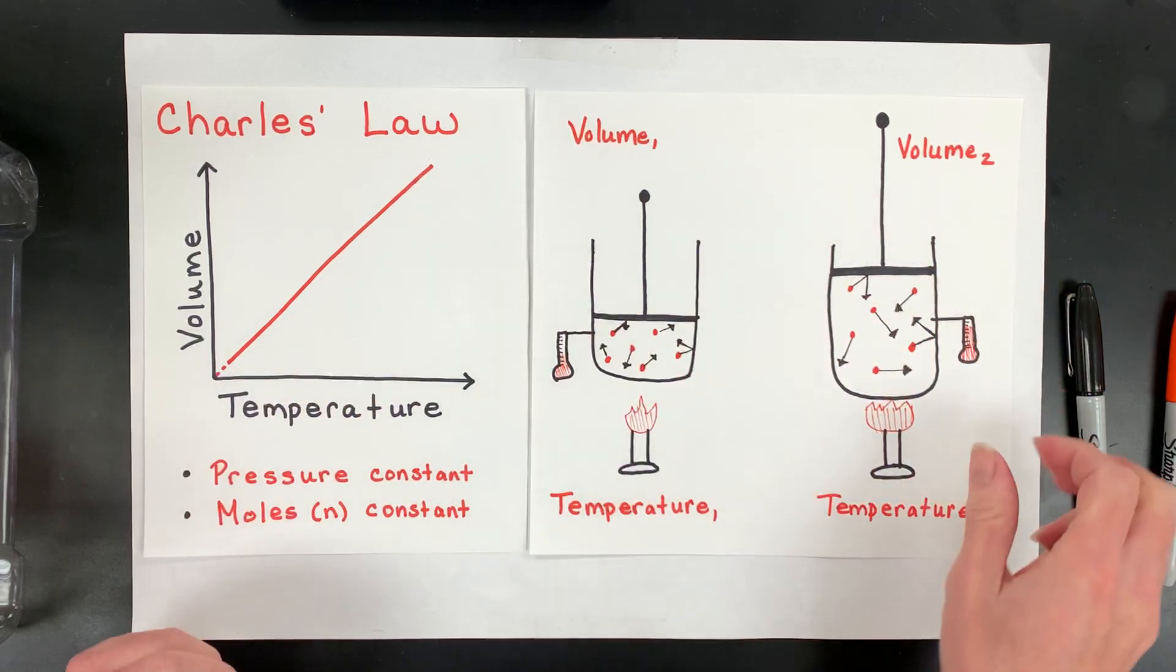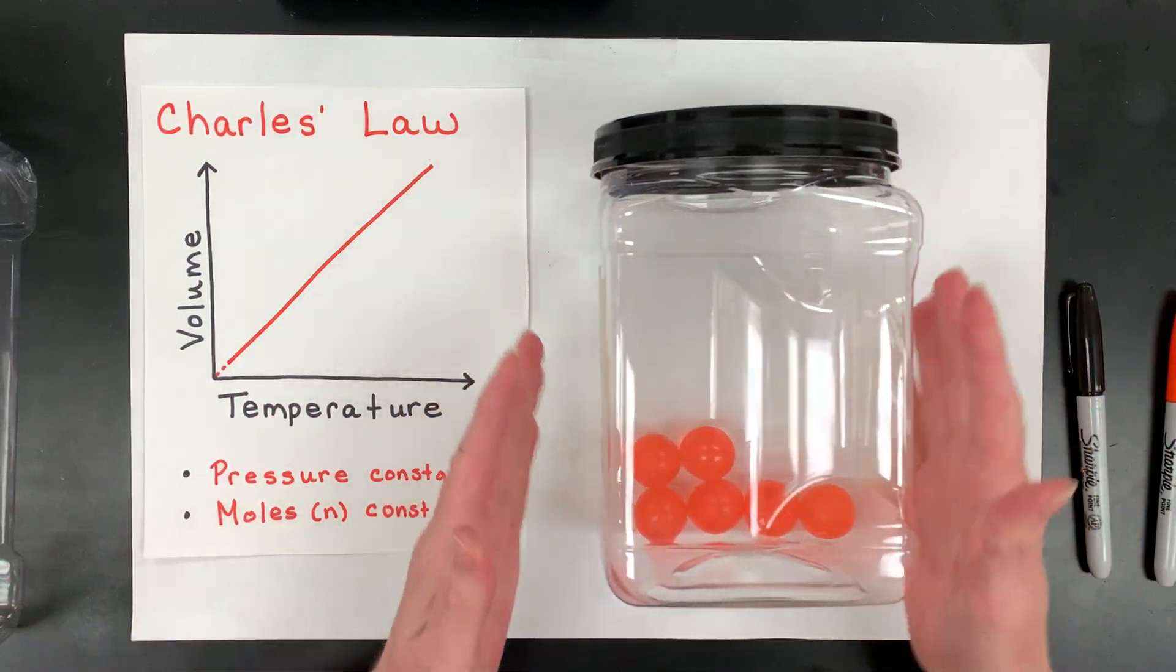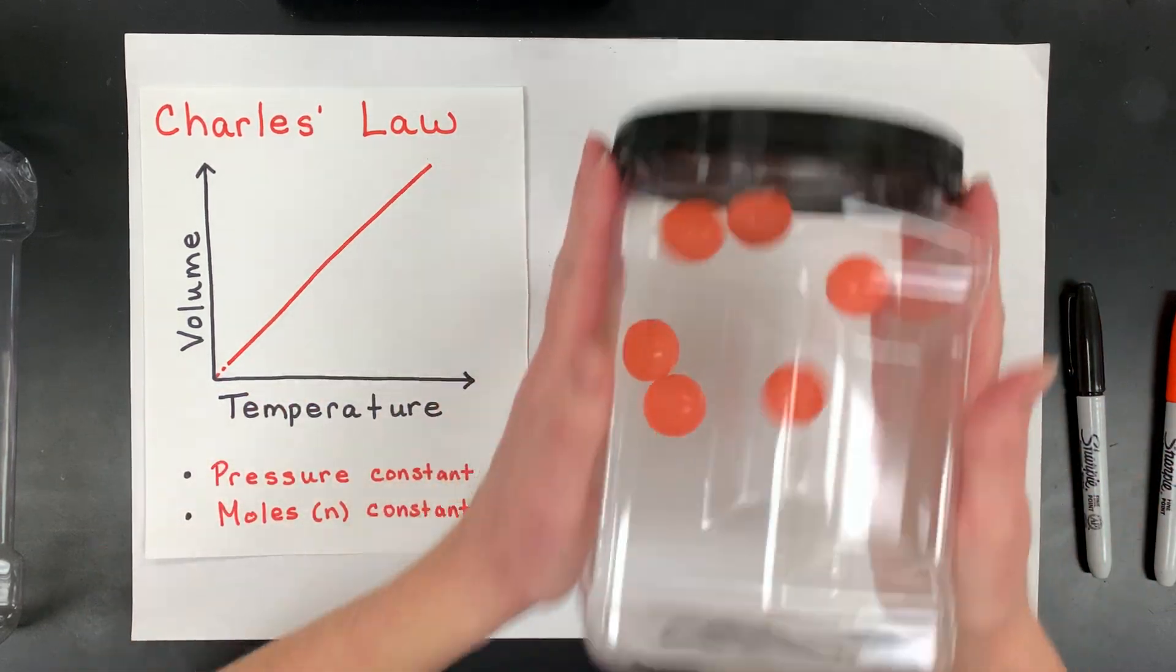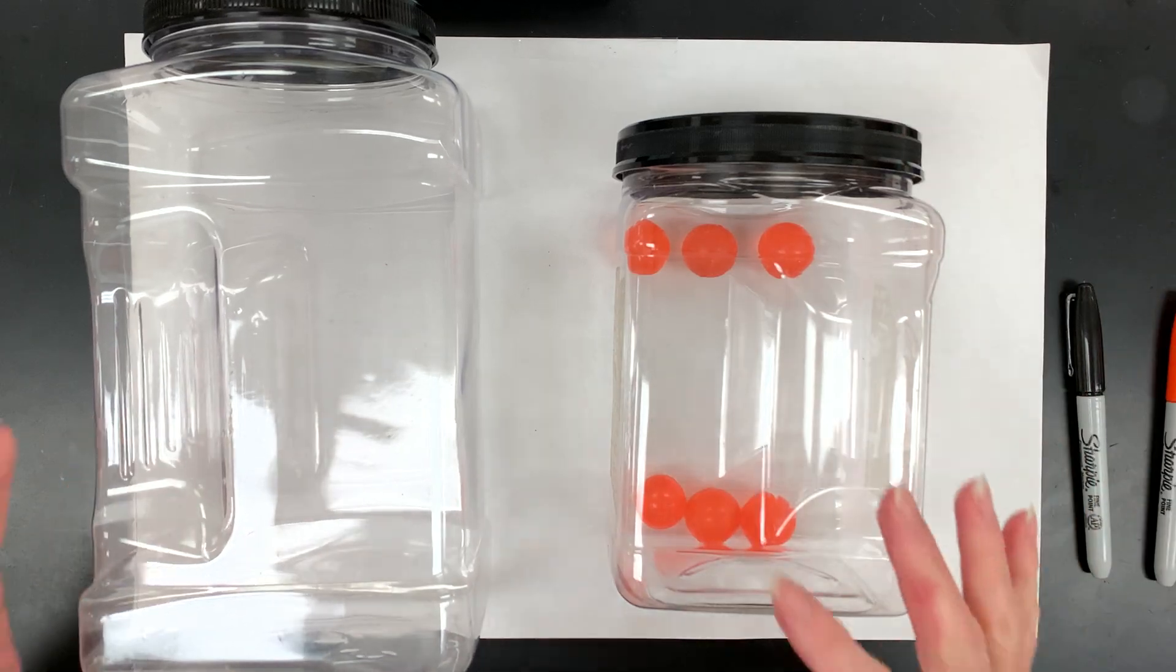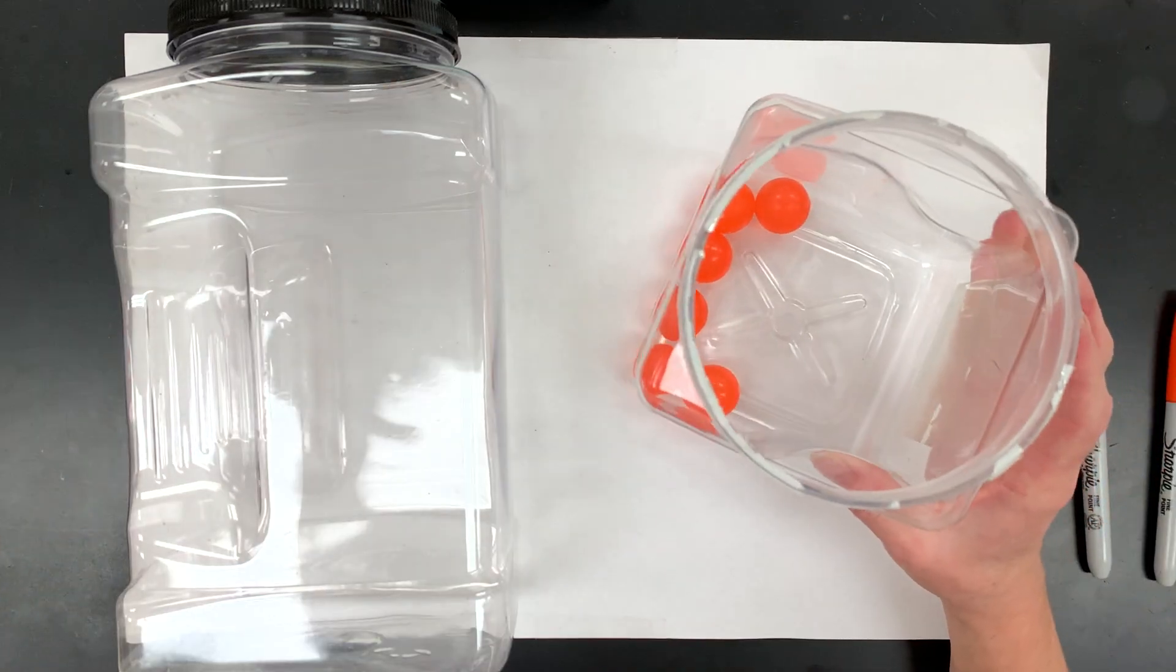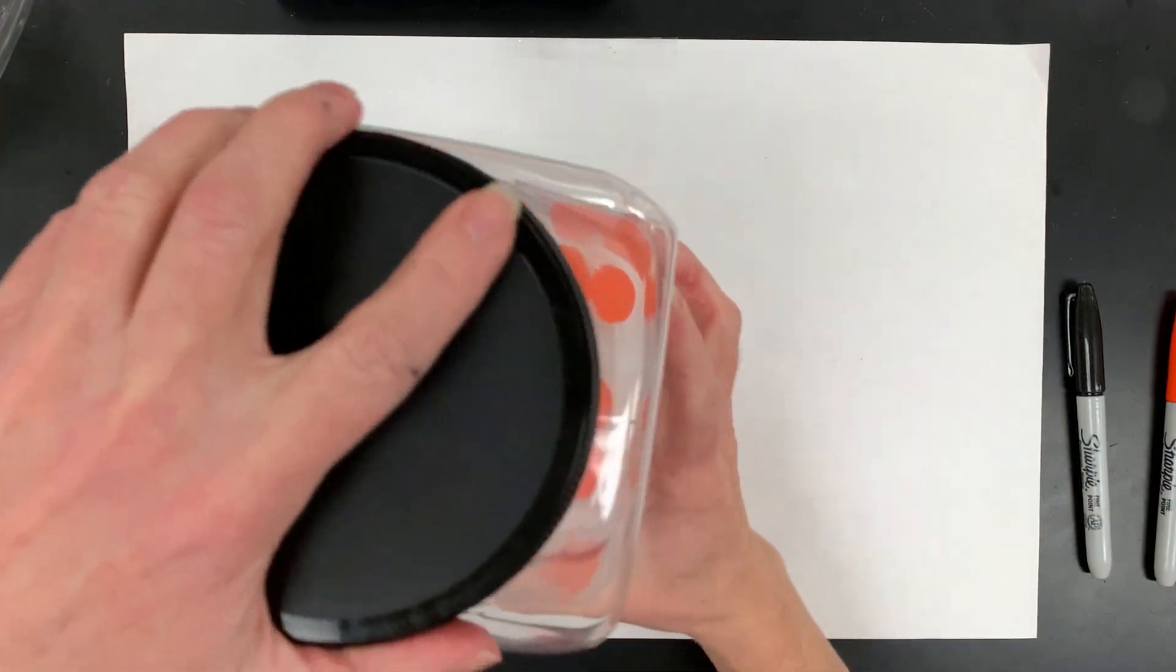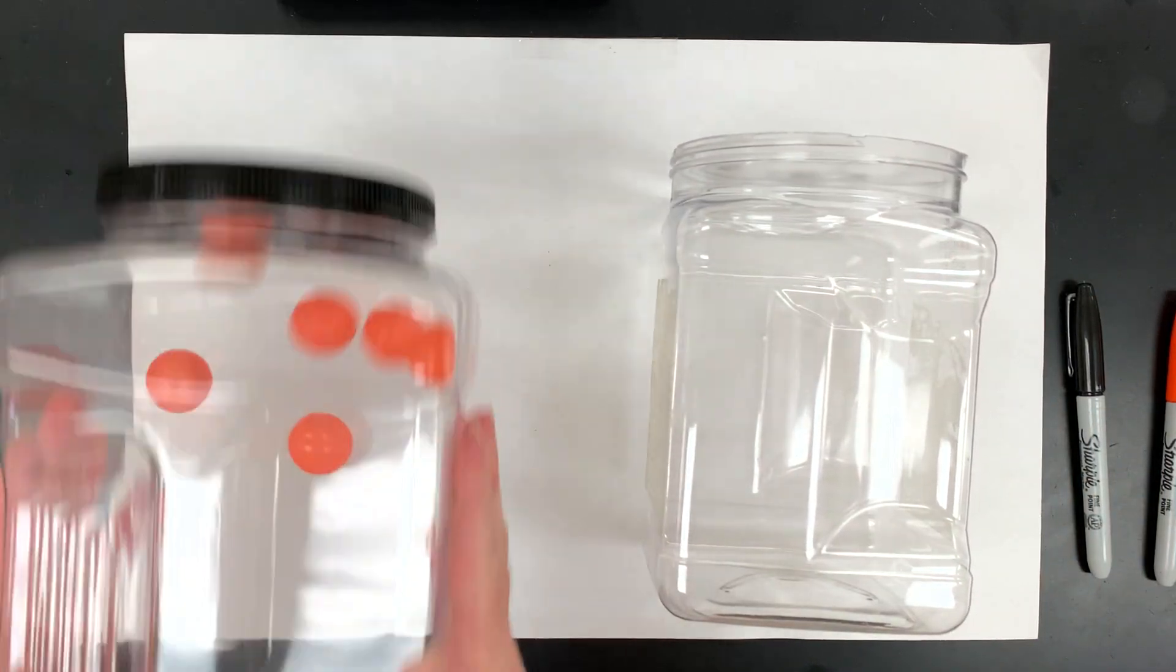Instead of just showing you a particulate view, I also want to try to show you with an actual set of pretend gas particles. Here is my original sample. It has this pressure, which is the collisions with the walls of the container. I have a set number of moles and the movement I was giving it is the temperature, and then it occupies this volume. With the example that I'm giving you, I'm going to have to change the volume by moving these over. But normally what would happen is you'd have a balloon or some kind of syringe or piston. What would happen is the temperature would go up, then the gas particles would collide in a way that they would make the volume increase.